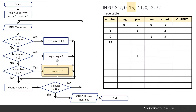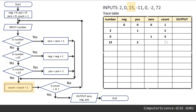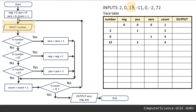Our pos variable equals its previous value with an extra one added. So pos is one plus one — pos becomes two. Count equals its previous value plus one: three plus one is four. Is count equal to eight? No, it's not. Round we go again onto our next input.